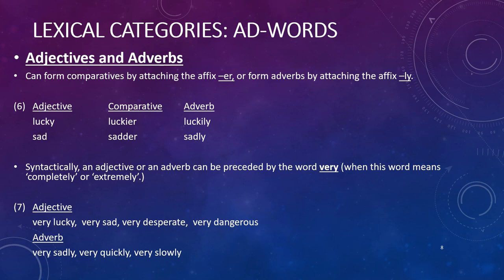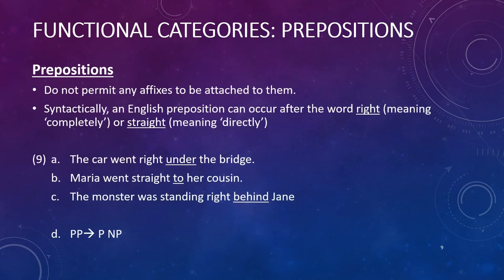Prepositions generally do not permit any affixes to be attached to them. Syntactically, an English preposition can occur after the word 'right' meaning 'completely,' or sometimes 'straight' meaning 'directly.' So you can say 'the car went right under the bridge' or 'Maria went straight to her cousin.' You can also use the prepositional phrase rule — a prepositional phrase breaks into a preposition and a noun phrase. So if you have a short-looking word like 'to,' 'from,' 'with,' or 'near' occurring before a noun phrase, and it is not a determiner, it is probably a preposition.